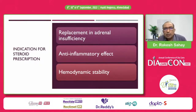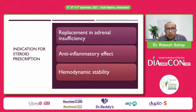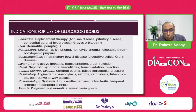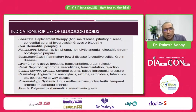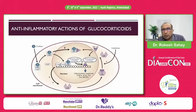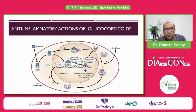As we know, steroids are used not only for replacement in adrenal insufficiency but mainly for their anti-inflammatory effects and also for hemodynamic stability. A lot of conditions — whether you look at any organ disorder — any specialist will be using steroids for management of many conditions. It's important that we understand what steroids do to hyperglycemia, how they bring it about, and what we should do about managing such a problem.